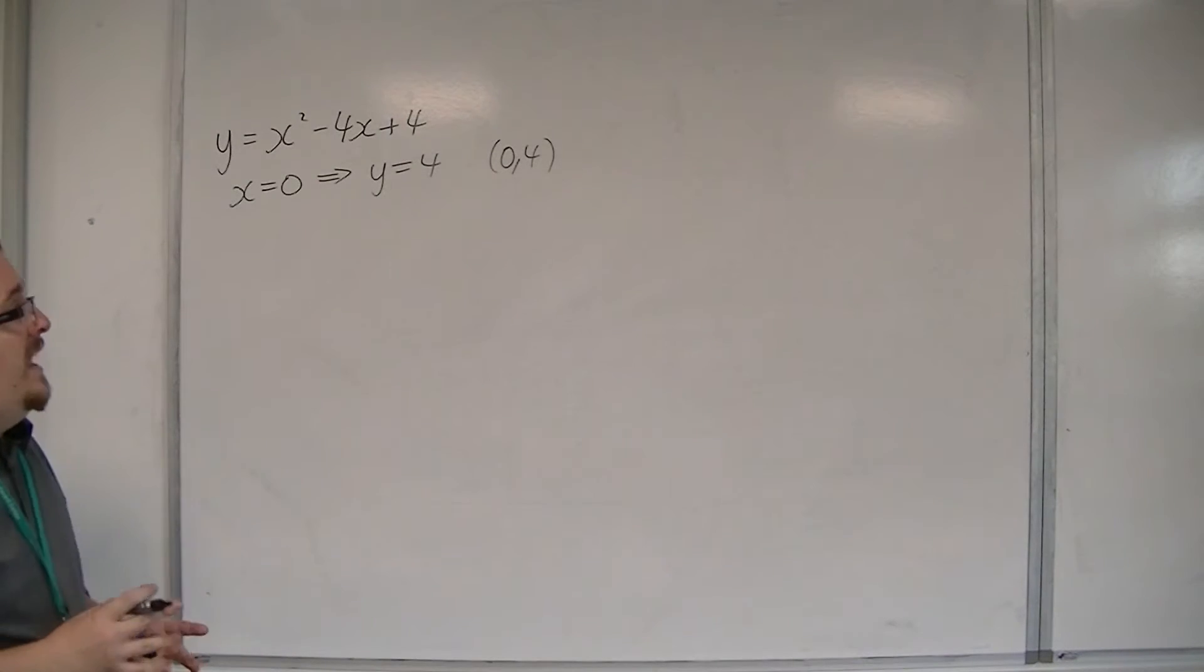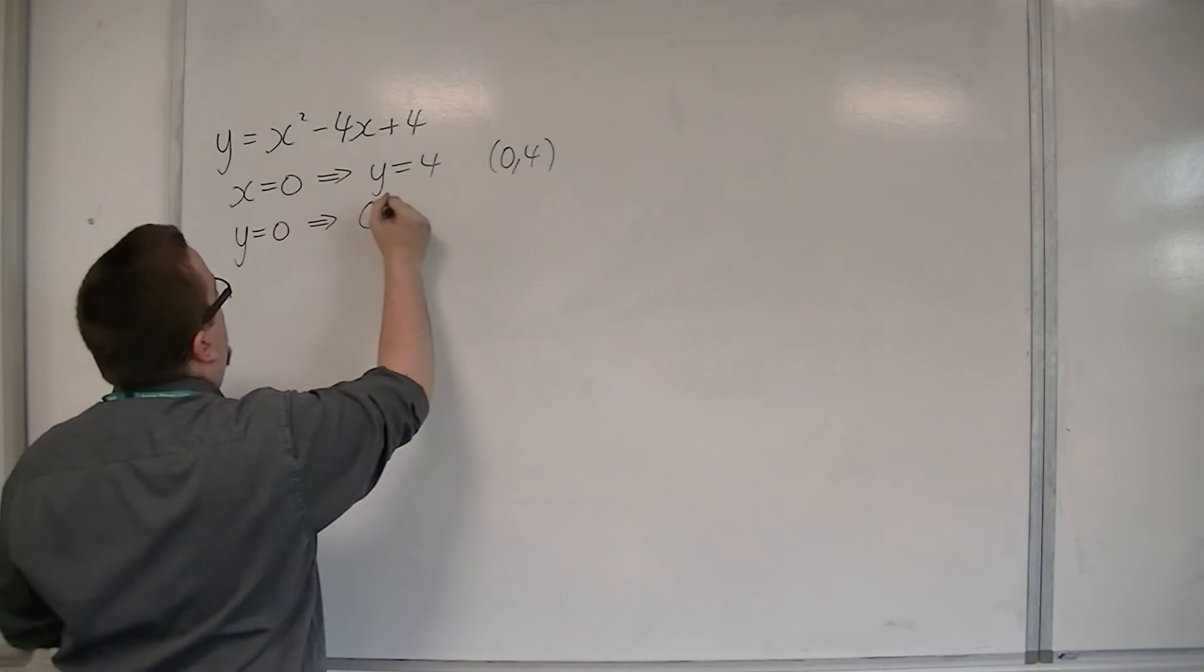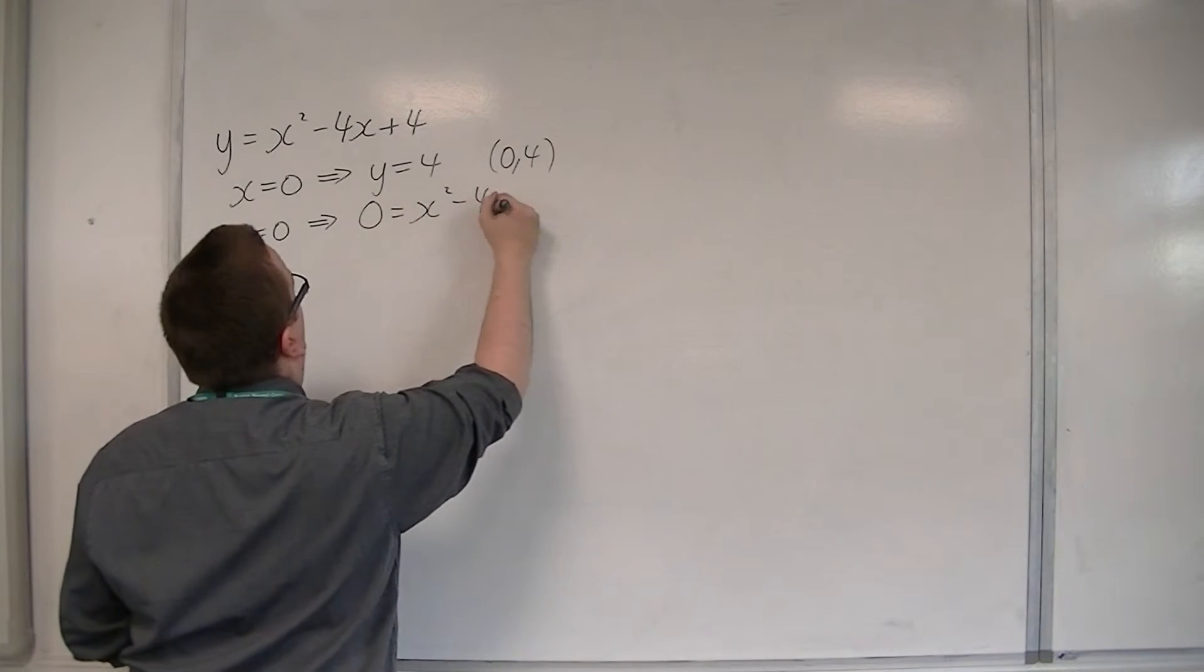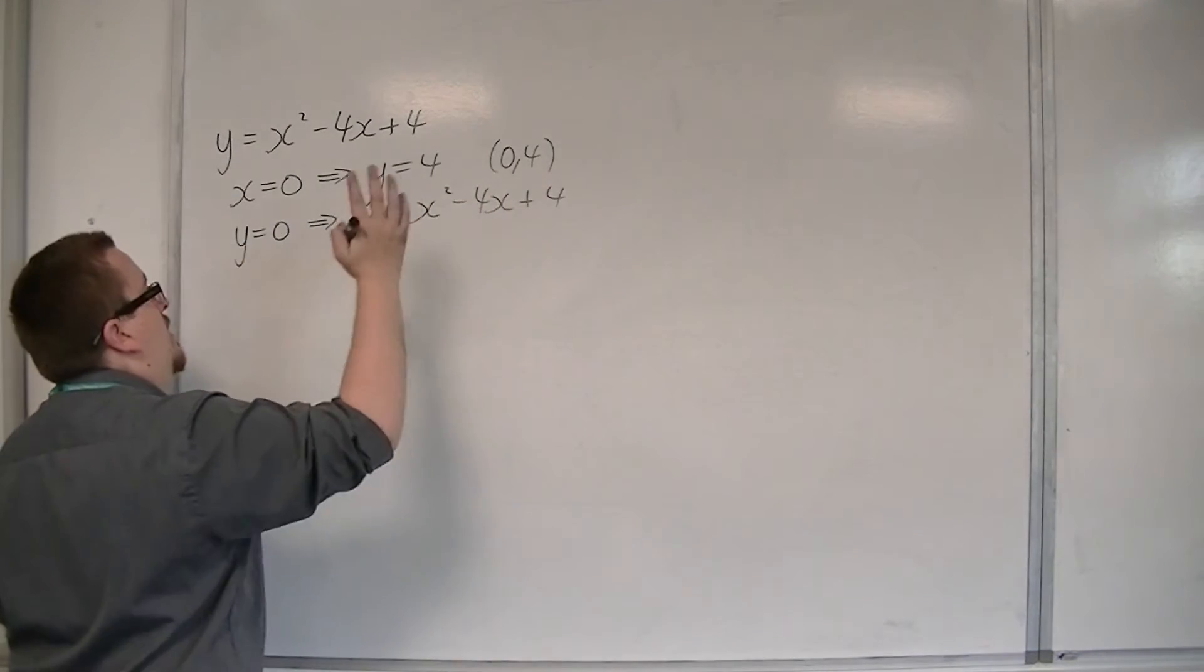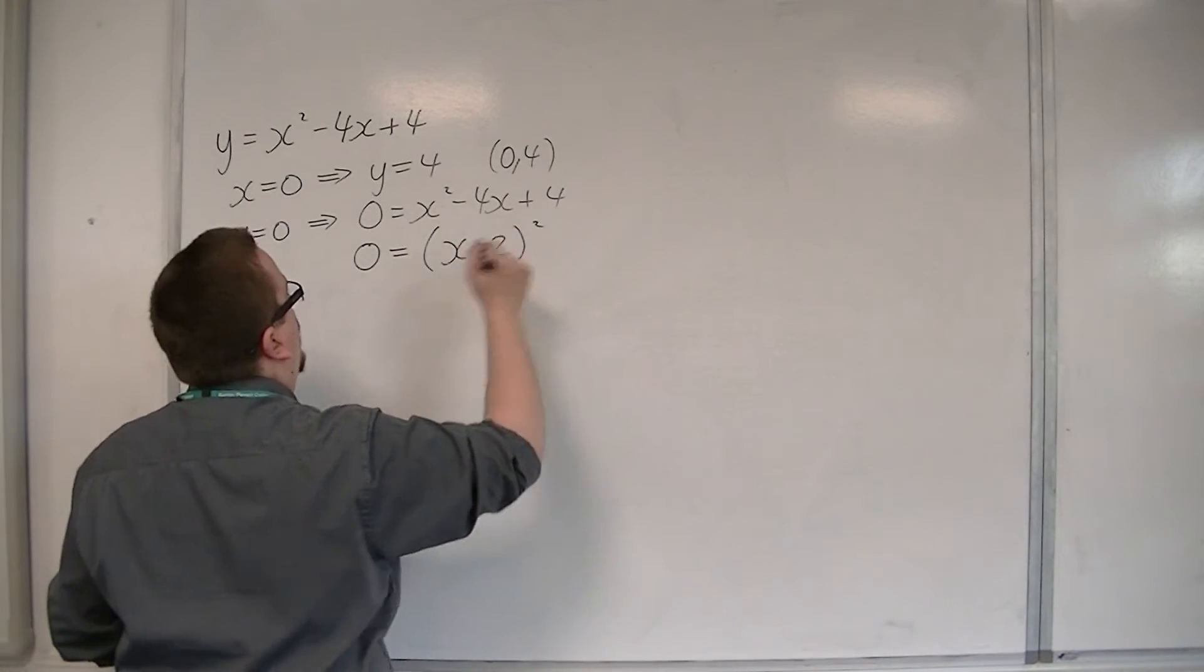We then want to find where it crosses the x-axis. So that's when y is 0. So 0 is equal to x squared minus 4x plus 4. This is a quadratic I can factorize, because that's x minus 2 all squared.